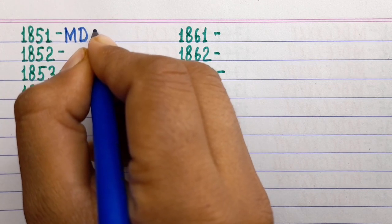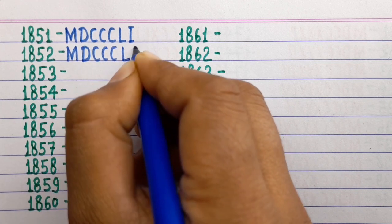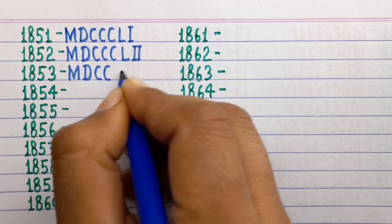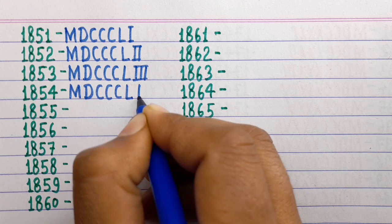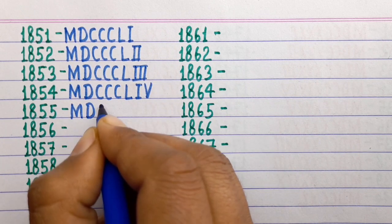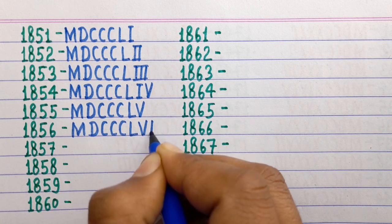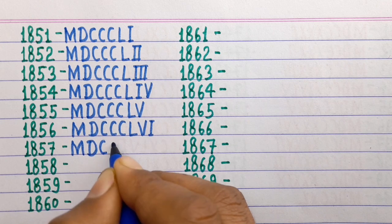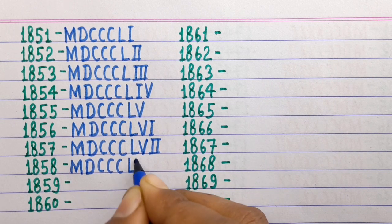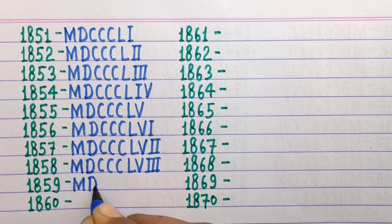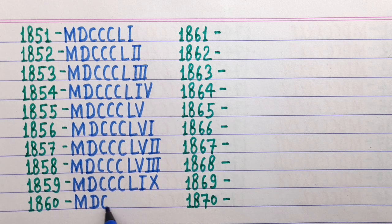1851 MDCCCLI, 1854 MDCCCLIV, 1855 MDCCCLV, 1856 MDCCCLVI, 1857 MDCCCLVII, 1858 MDCCCLVIII, 1859 MDCCCLIX, 1860 MDCCCLX.